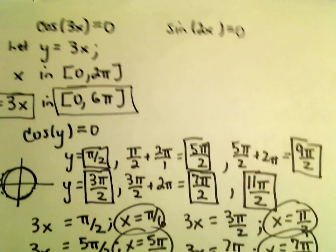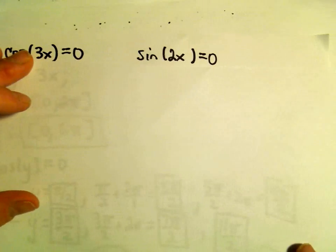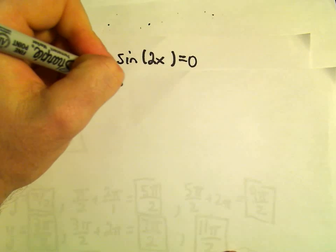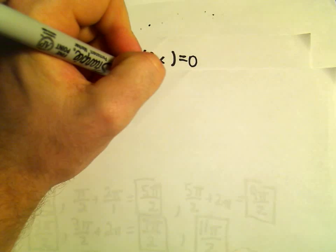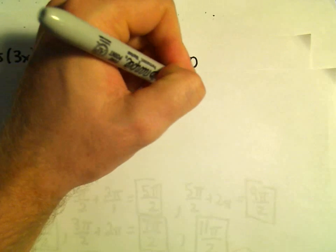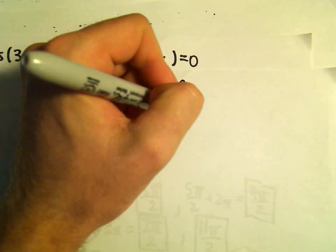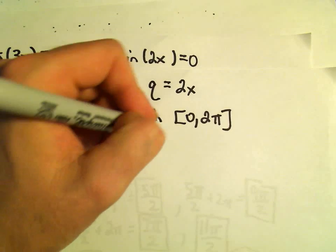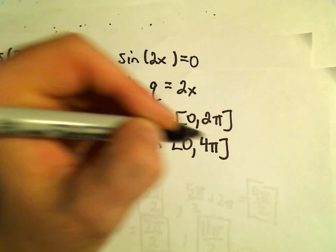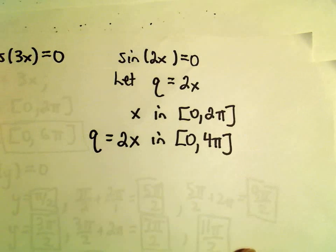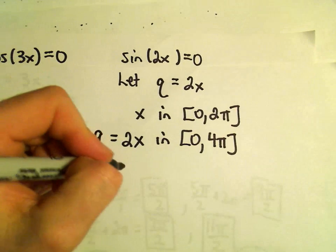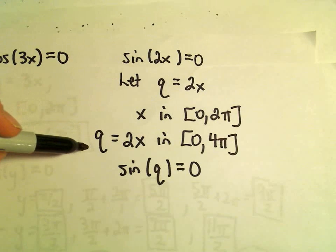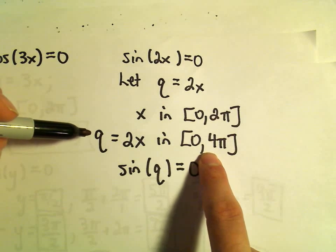So now we're going to have to do the same thing for sine of 2x. Since we already used y, maybe let's use something else. Maybe we can say let's let q equal 2x, whatever. Since originally x was in the interval 0 to 2π, that means 2x would be in the interval 0 to 4π. And that's what we're relabeling as q. So really, we're trying to solve sine of q equals 0. But now we have to think about all solutions in this interval 0 to 4π.